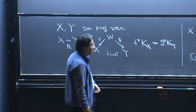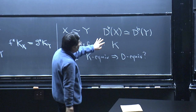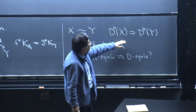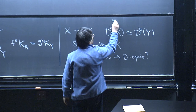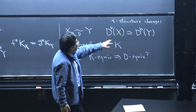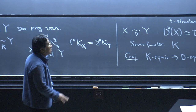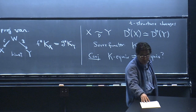In this equivalence, coherent sheaves do not directly correspond. In this categorical equivalence, the t-structure changes. That means coherent sheaves on X correspond to complexes of coherent sheaves on Y and vice versa. So this is a non-trivial correspondence, which makes things more interesting.